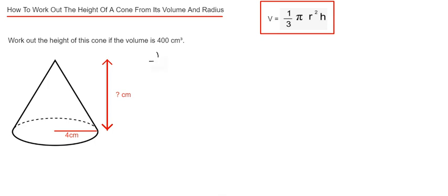So our first line will be: a third times pi times 4 squared times by the height, which we're after, equals 400. We can work out what 4 squared is now — that's 16.